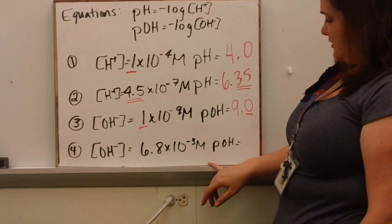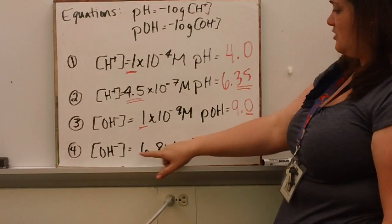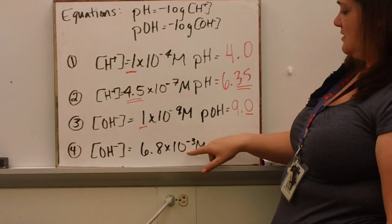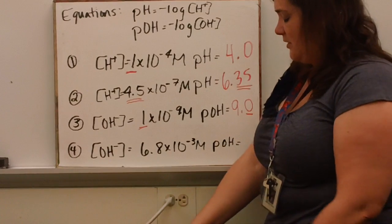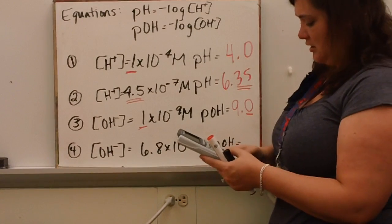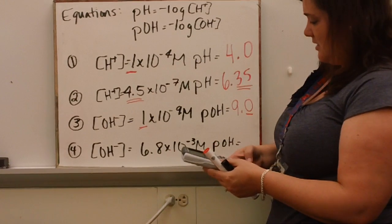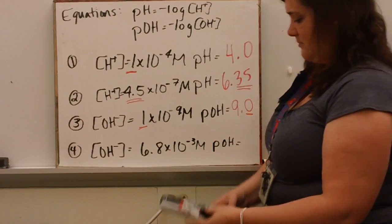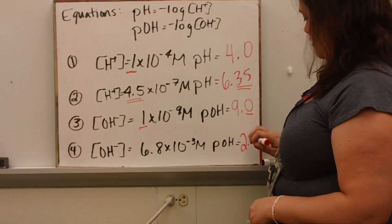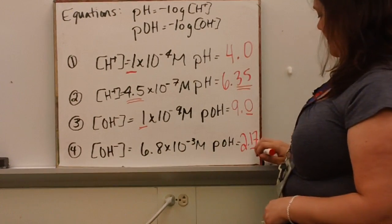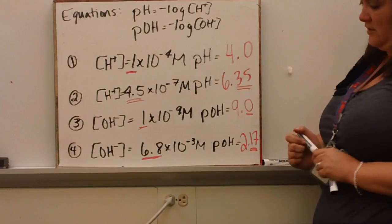For the last problem in this section, we want the pOH of a hydroxide concentration of 6.8×10⁻³. This will be something near 3. On the calculator, enter negative log 6.8 EE negative 3, and we get 2.17. Again, two decimal places because there were two significant figures in the concentration.